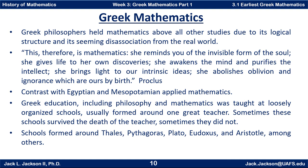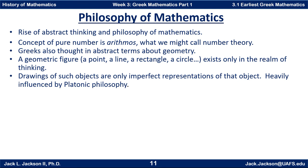Greek education, including philosophy and mathematics, was taught at loosely organized schools usually formed around one great teacher. Sometimes these schools survived the death of the teacher, and sometimes they did not. Schools formed around the great mathematicians such as Thales, Pythagoras, Plato, Eudoxus, and Aristotle, among others. Greek mathematics also gave rise to abstract thinking and even thinking about mathematics itself — the philosophy of mathematics. They talked about the concept of pure number, called arithmos, what we might call number theory, abstracting the question of what a number really means and what it means to count and add things as an abstract idea.